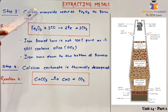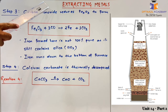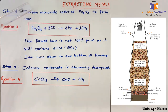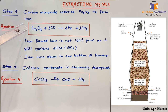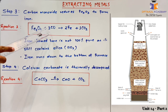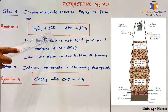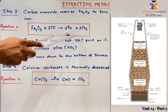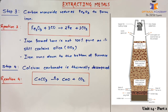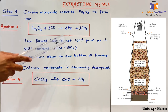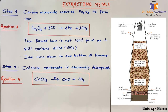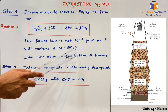In Step 3, carbon monoxide formed in Step 2 reduces iron oxide to form iron. The 3rd reaction in the blast furnace is: Fe2O3 + CO → Fe + CO2. Note that the iron formed by this reduction process is not 100% pure, as it still contains silica impurities, i.e., SiO2.